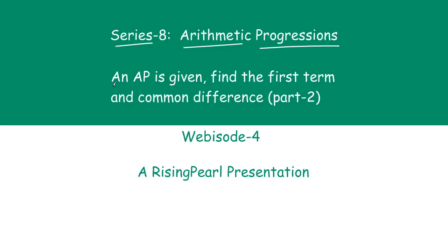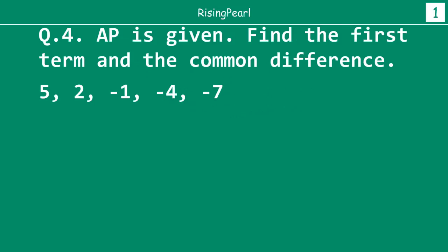So, say for example, if an AP is given, how can we find out the first term and the common difference? These types of questions we are going to look at in part 2, because Webisode 3 was part 1 where we looked at one more type of questions on arithmetic progression. So friends, let's take a look.